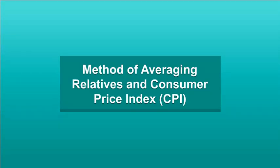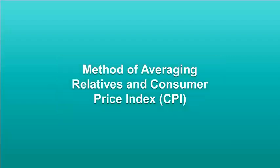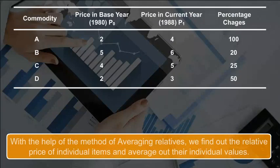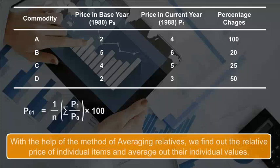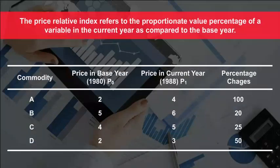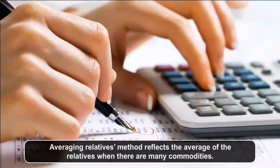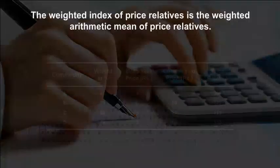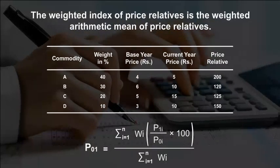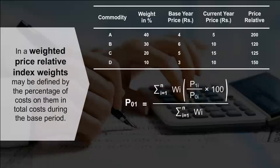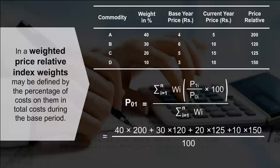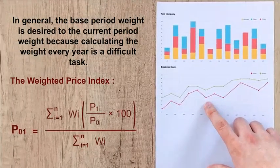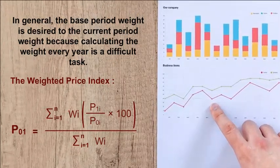Method of Averaging Relatives: With the help of this method, we find out the relative price of individual items and average out their individual values. The price relative index refers to the proportionate value percentage of a variable in the current year compared to the base year. The weighted index of price relatives is the weighted arithmetic mean of price relatives, where weights may be defined by the percentage of costs in total costs during the base period. Base period weights are generally preferred over current period weights because calculating weights every year is a difficult task.